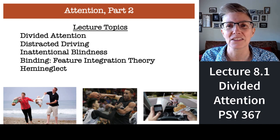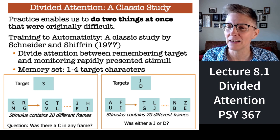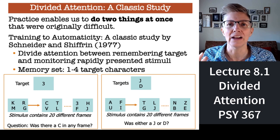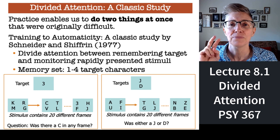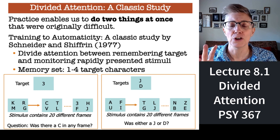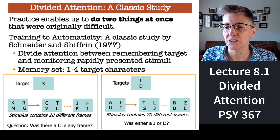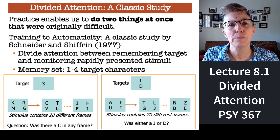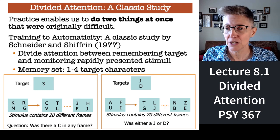Let's start with this classic study by Snyder and Schifrin done back in 1977. They wanted to see: can you actually divide your attention? In other words, can you do two different things at the same time? And if so, what does it take in terms of practice? The task required people to do two things simultaneously.